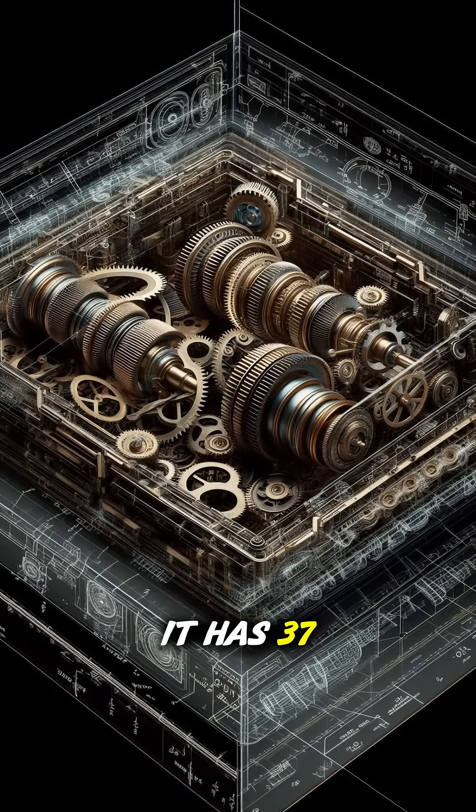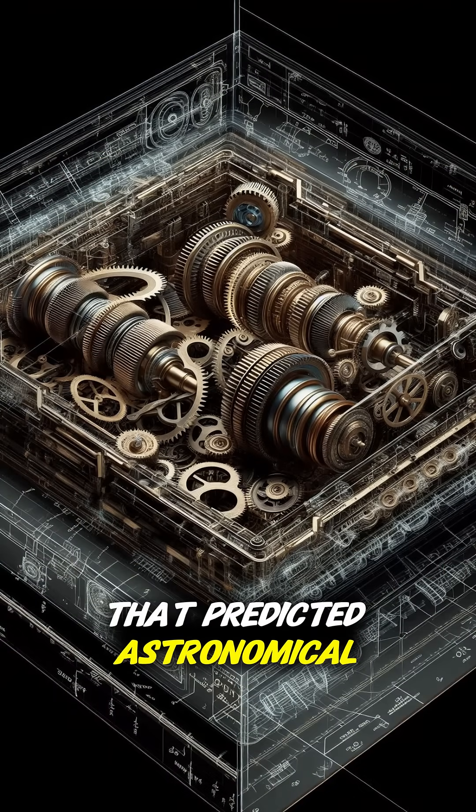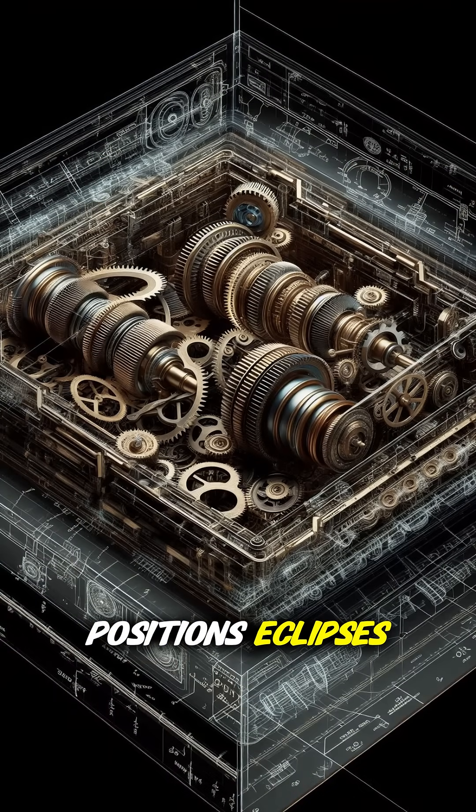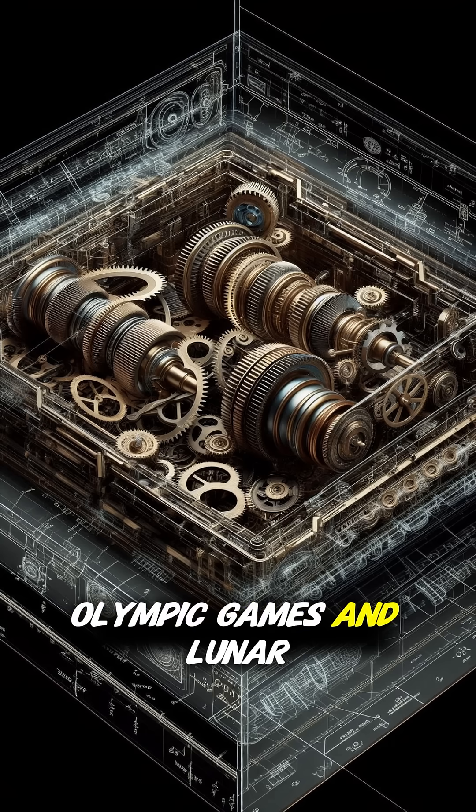It has 37 bronze gears that predicted astronomical positions, eclipses, Olympic games, and lunar cycles.